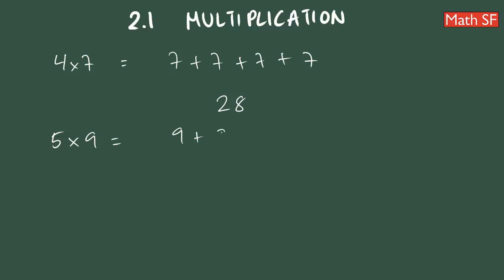So if we're asked to multiply 5 times 9, are we going to add 9 plus 9 plus 9 plus 9 every single time? No. For that, we must memorize the times table. But how are we going to memorize it?